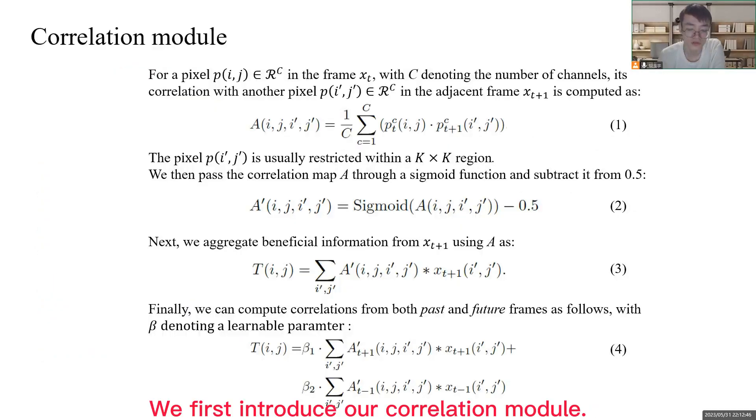We first introduce our correlation model. For a pixel p(i,j) in the frame x_t with C denoting the number of channels, its correlation with another pixel p(i',j') in the adjacent frame x_{t+1} is computed and summed along the channel dimension to compute the correlation map A_t.